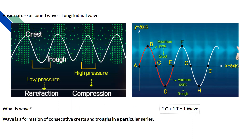That means the quantity of particles is very high in the compression region. The low pressure region is called rarefaction and the high pressure region is called compression. If we look at the wave form, the maximum peak point is known as the crest, and the minimum peak — the valley — is known as the trough.